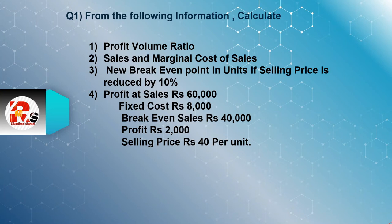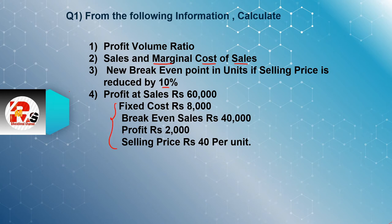From the following information, calculate PVR, then calculate the sales and marginal cost of sales. Also calculate the new break-even point in units if the selling price is reduced by 10%, and find the profit at sales of 60,000. The given information is: fixed cost is 8,000, break-even sales is 40,000, profit is 2,000, and selling price per unit is 40 rupees.